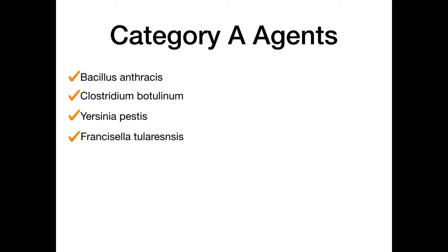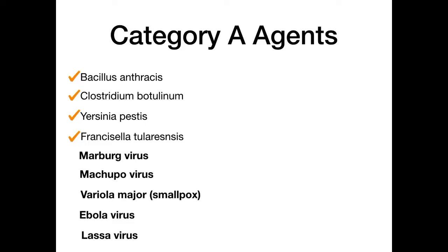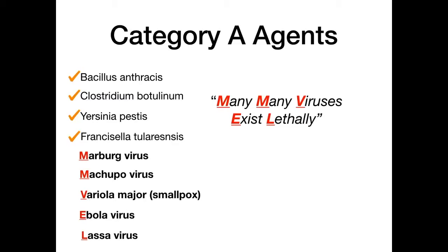Now let's talk about the five category A agents you've probably never heard of before — that's the real focus of this section. They are Marburg virus, Machupo virus, Variola major (smallpox), Ebola, and Lassa virus. The mnemonic is: 'Many, many viruses exist lethally' — M-M-V-E-L. Because it contains the word 'lethally,' this helps us remember that category A is the most lethal category.